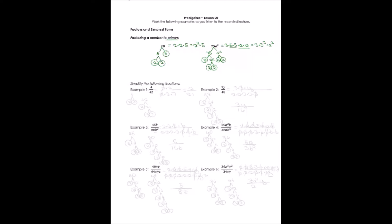Let's take example 1. The numerator is 4 — its prime factors are 2 times 2. Now 42 is a little harder. I always start with 2 if it's an even number: 2 times 21. 2 is prime, and 21 I can factor again: 3 times 7. So the prime factorization of 42 is 2 times 3 times 7.